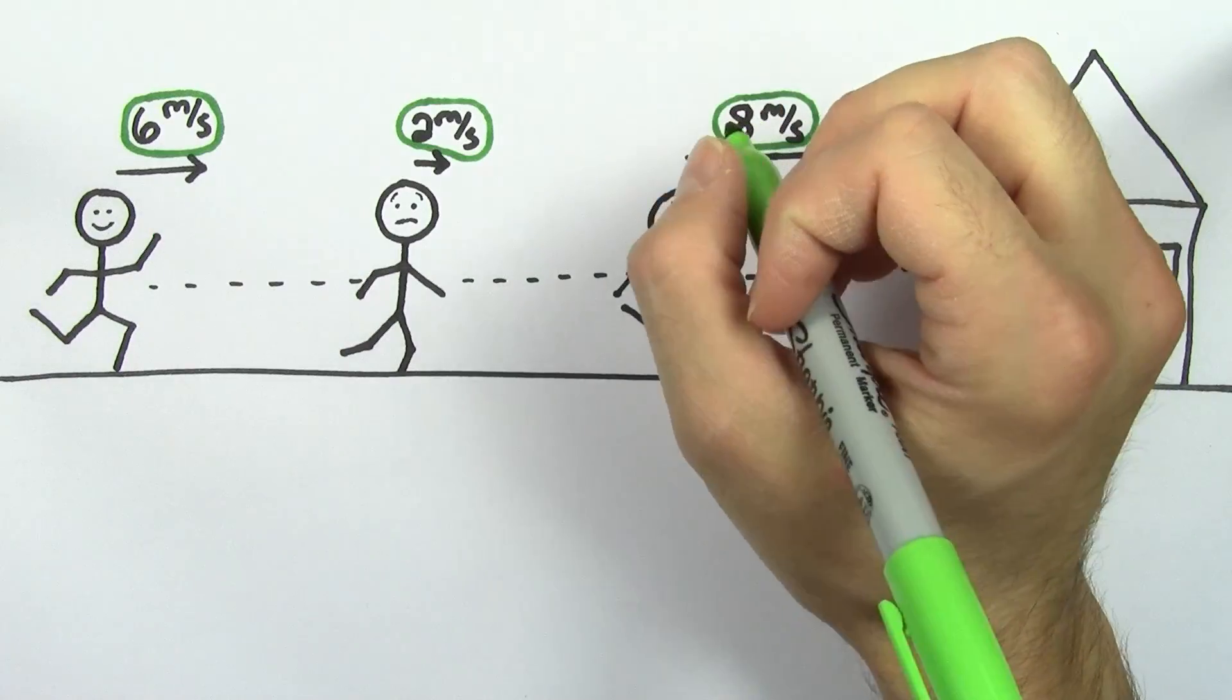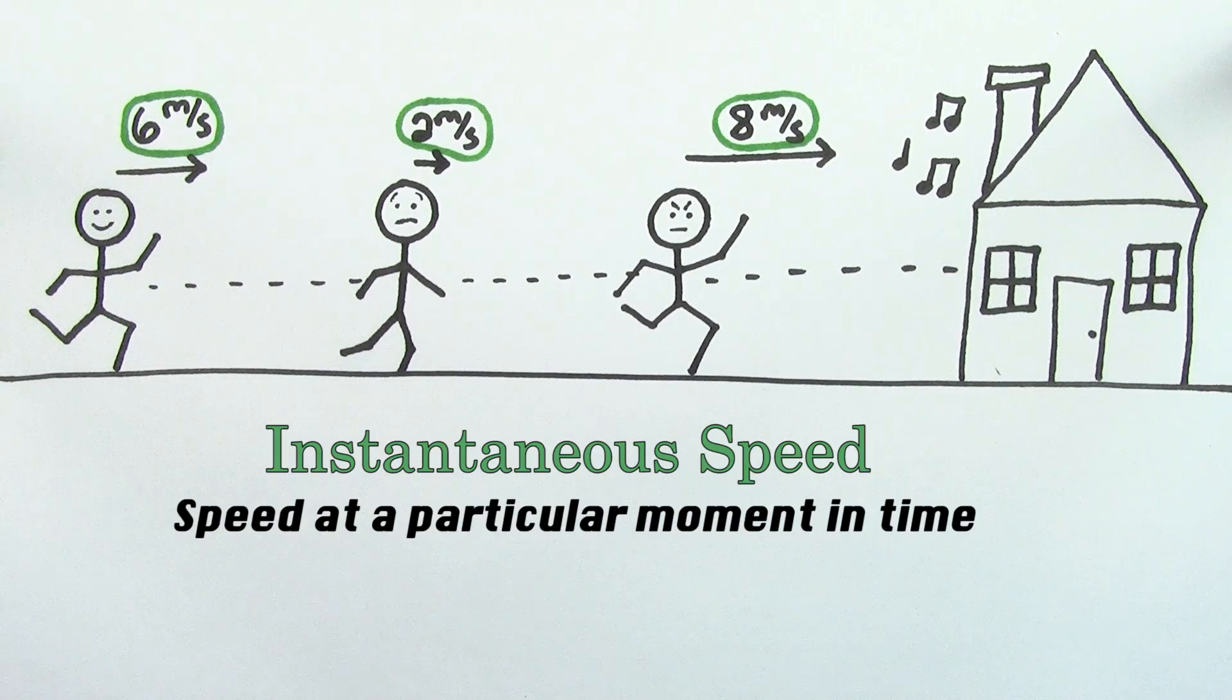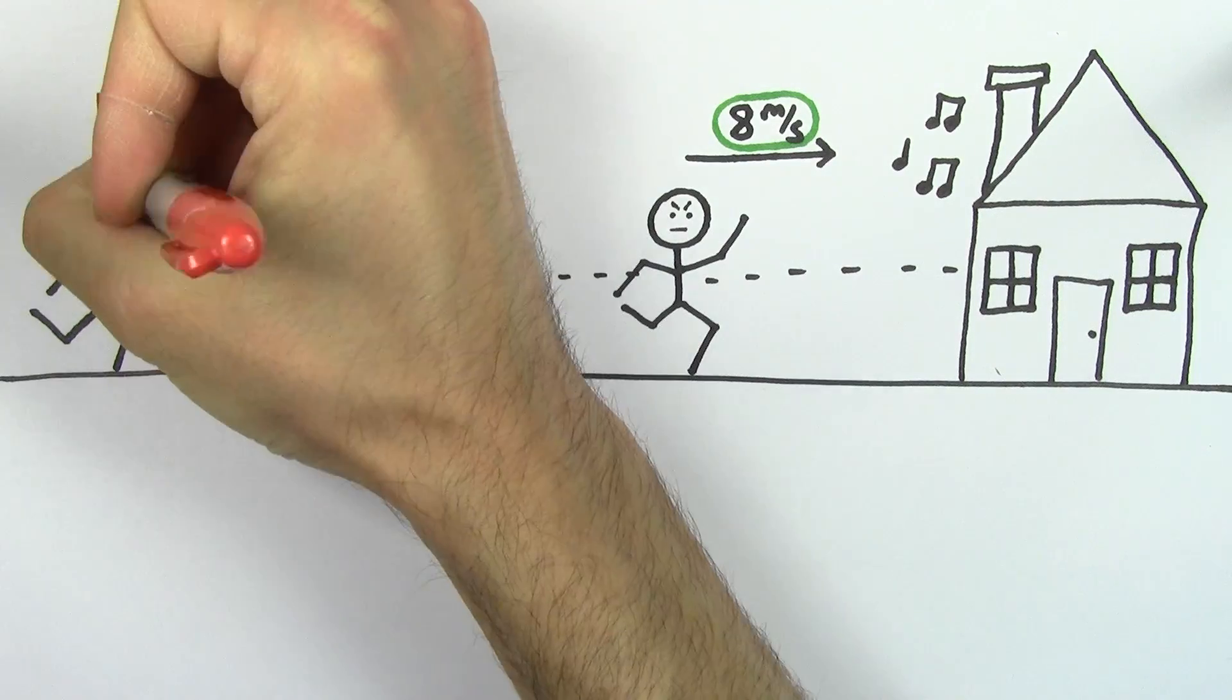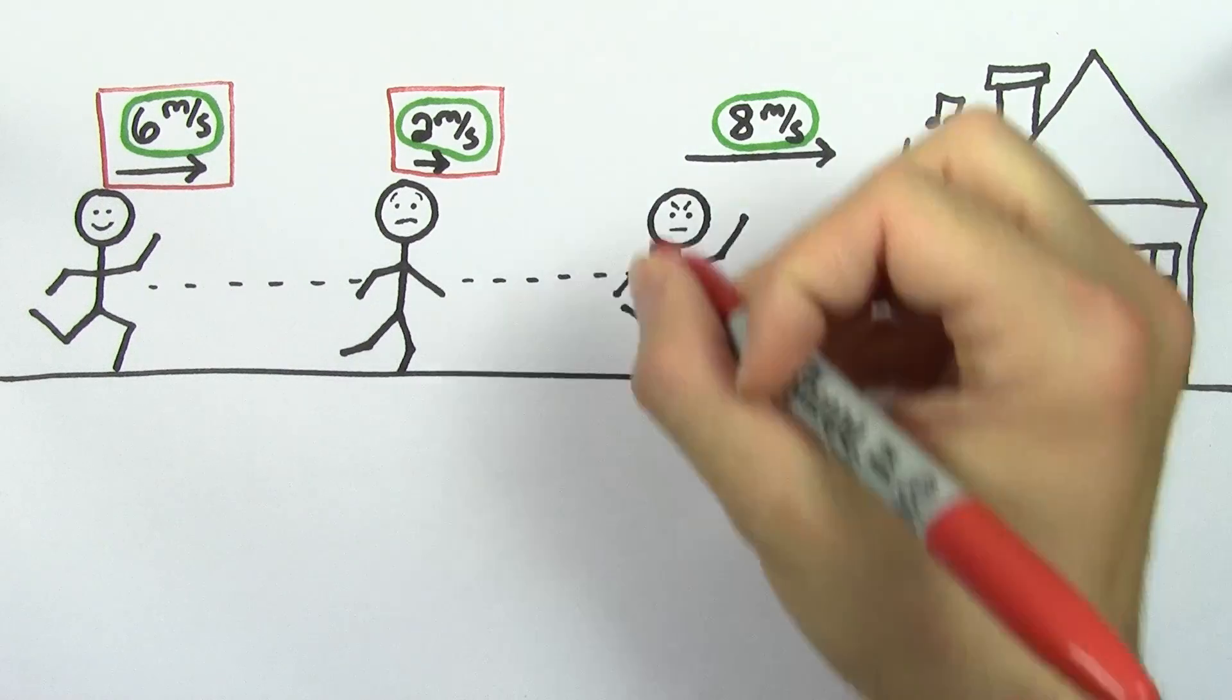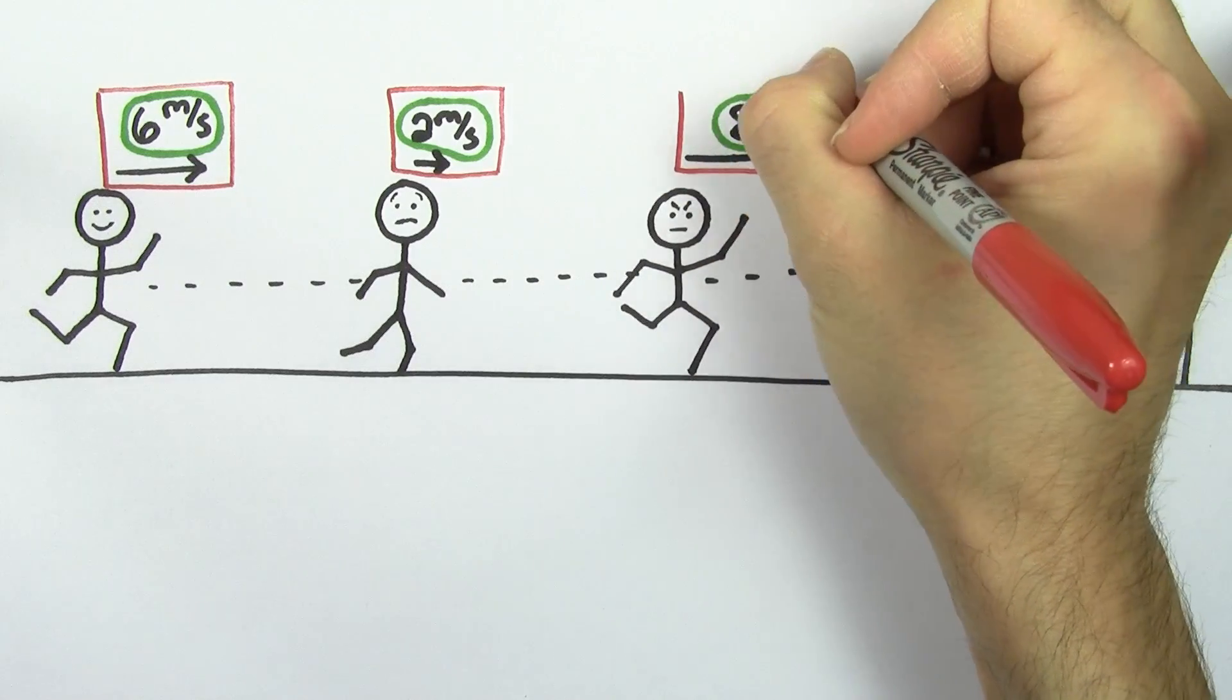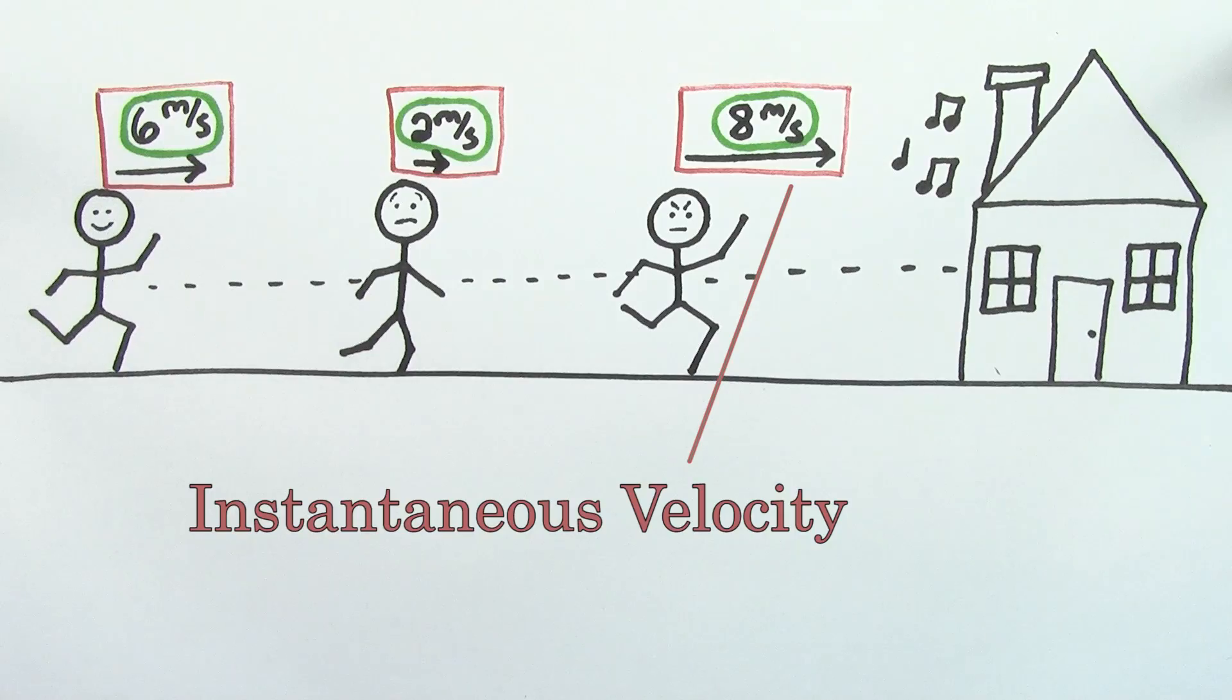These numbers are values of the instantaneous speed. The instantaneous speed is the speed of an object at a particular moment in time. If you include the direction with that speed, you get the instantaneous velocity. In other words, 8 meters per second to the right was the instantaneous velocity of this person at that particular moment in time.